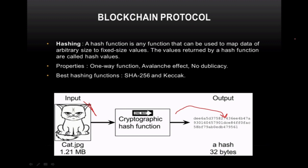The avalanche effect means that even a very small change in data — even a mere space — can change the hash to a completely different value. There is also no duplicacy: the chance of having a duplicate hash is almost impossible. The best hashing functions are SHA-256 and Keccak. SHA-256 takes any input and gives a 256-bit or 32-byte hash, allowing about 2 to the power of 256 combinations, making the probability of a duplicate extremely low.